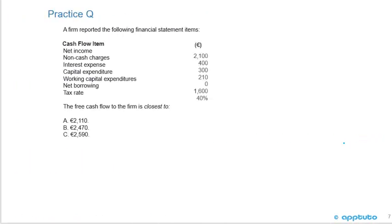Another practice question: A firm reported the following in euros — net income 2,100, non-cash charges 400, interest expense 300, capital expenditure 210, working capital expenditure 0, net borrowing 1,600, tax rate 40%. The free cash flow to the firm is closest to: A) €2,110, B) €2,470, or C) €2,590.